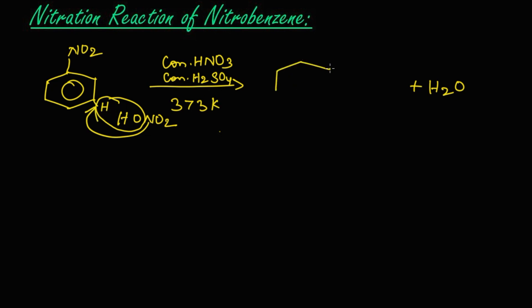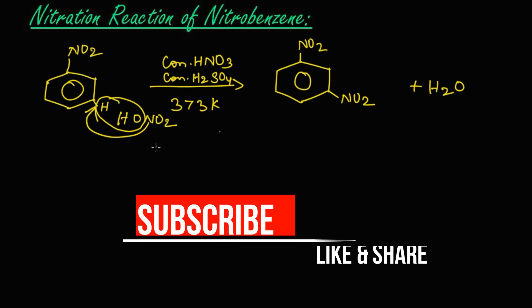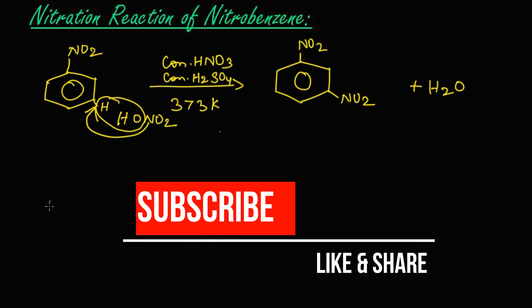So we get here NO2 and in the meta position NO2. The name of this compound is meta-dinitrobenzene or 1,3-dinitrobenzene. There is a possibility for another type of reaction at the temperature of 473 Kelvin. Let us learn that reaction.